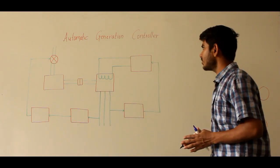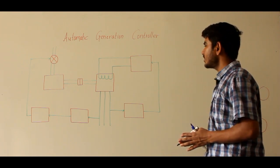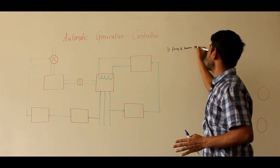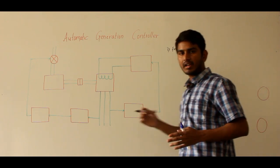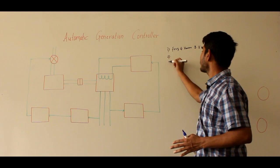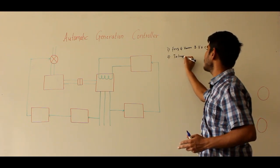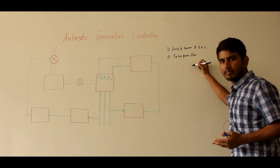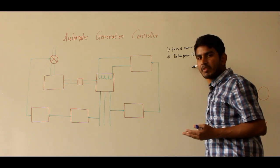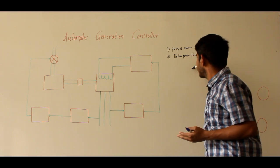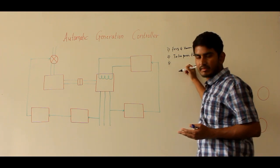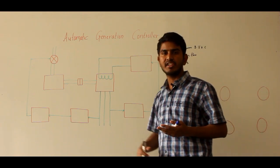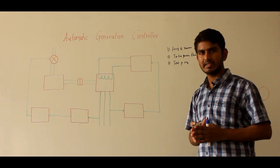The purpose of using AGC — the requirement of AGC — is to ensure three things. First, the frequency of various bus voltages and currents must be maintained at or near specified values. Second, the tie-line power flow among the interconnected areas must be maintained at specified levels. Third, the total power requirement on the whole system will be shared by the individual generators at an economically optimal fashion. This is the necessity of AGC.